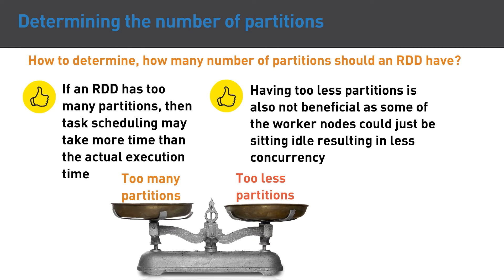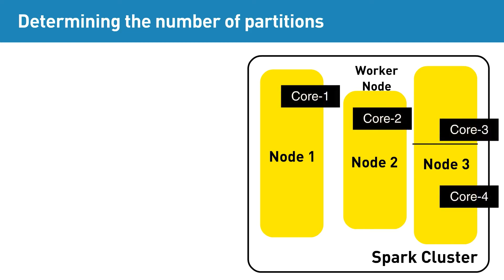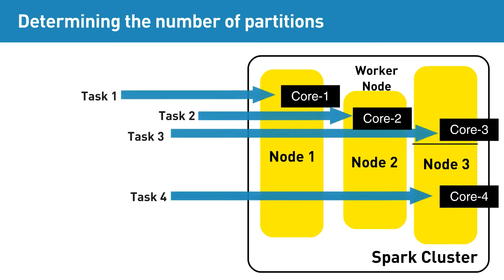Let's look deeper at how to determine the optimum number of partitions. Apache Spark can run as many parallel tasks as the number of cores available in the cluster at any moment of time. If a cluster has four cores, then Spark could run four tasks in parallel at any given point of time.